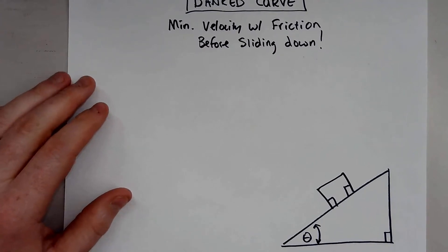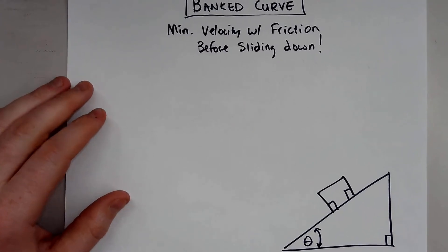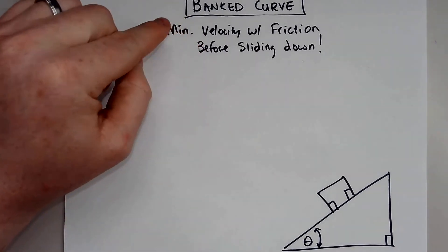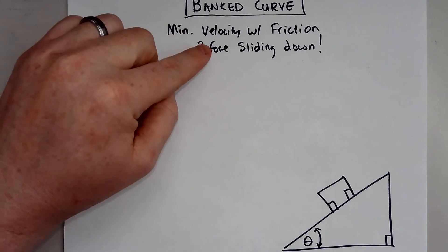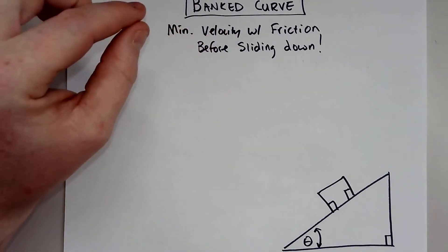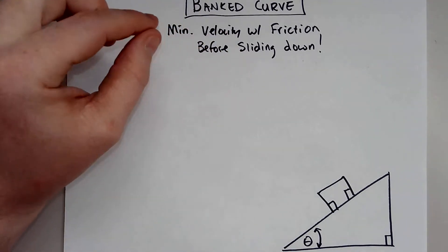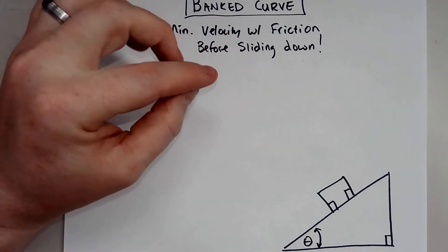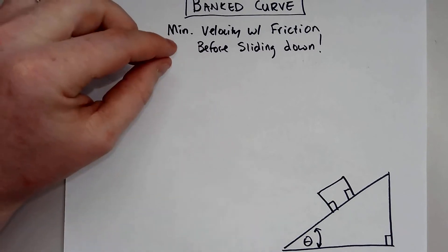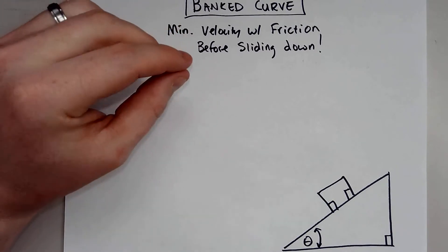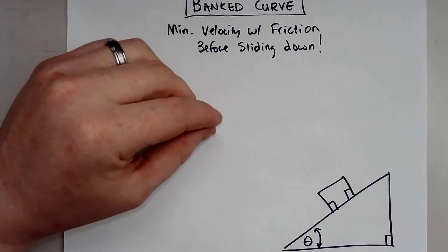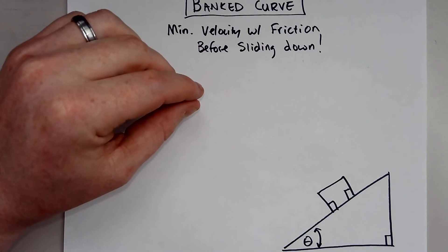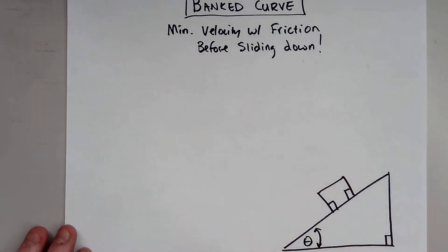How's it going, I'm Anthony Todd. Today I'm going to show you how to find the minimum velocity with friction on a banked curve — specifically, how slow an object has to go before it actually starts to slide down the ramp.